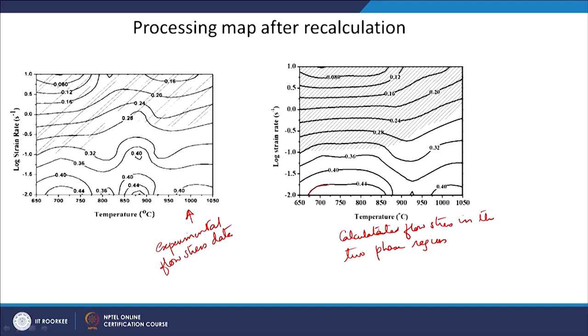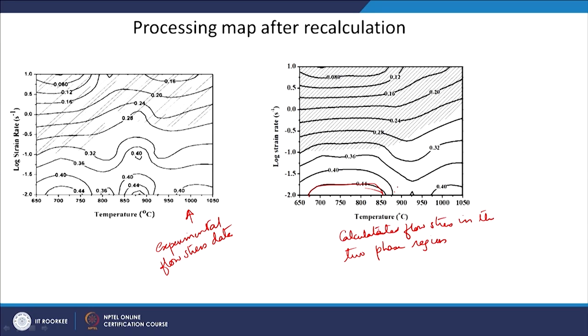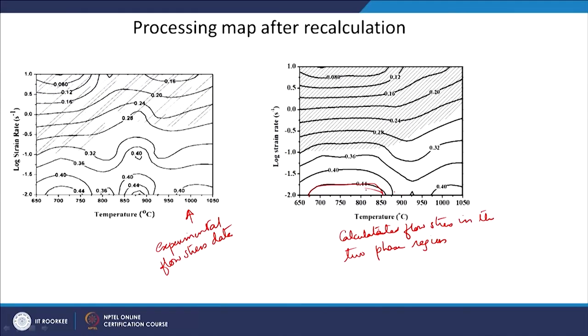This is our initial processing map from experimental data, and this is the map developed using calculated flow stress in the two-phase region — single-phase regions retain experimental values. The new processing map looks quite different. The main improvement is that you now obtain a very high efficiency zone continuously from around 675°C up to 850°C, where we actually see either partial recrystallization or full recrystallization. At higher temperatures where only few grains showed recrystallized behaviour, I am not seeing high efficiency, which is now correctly captured.